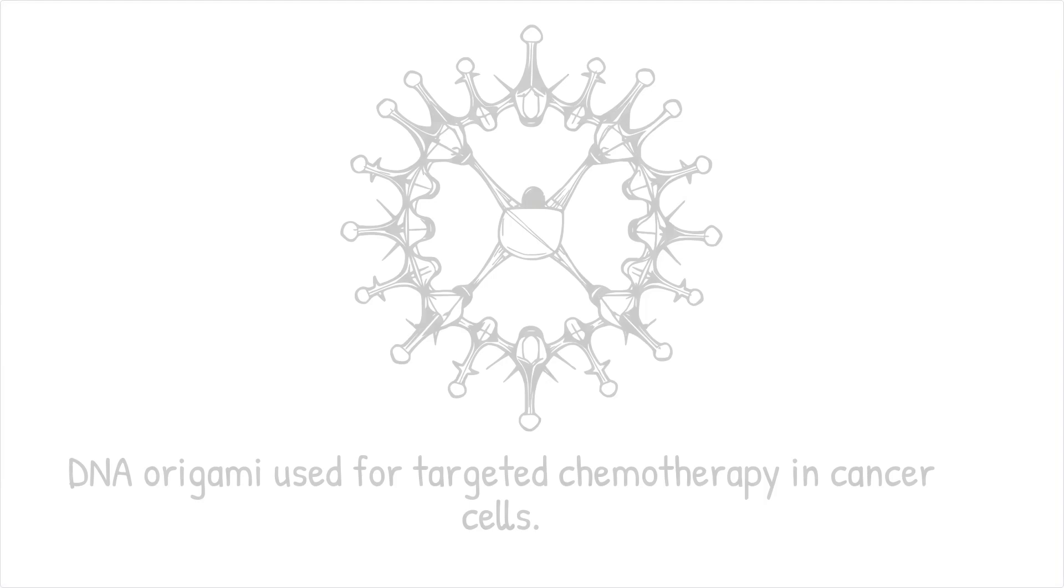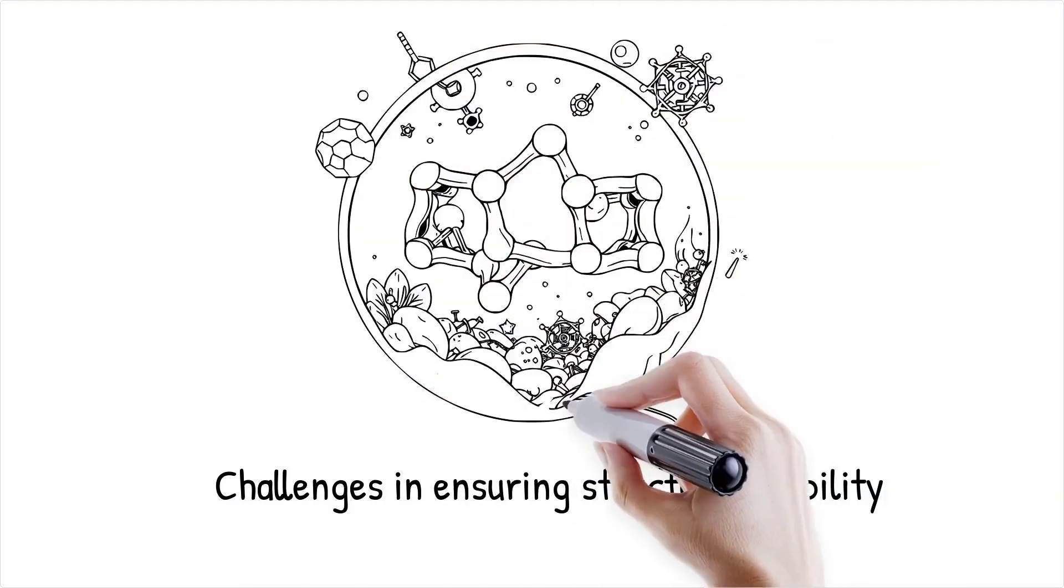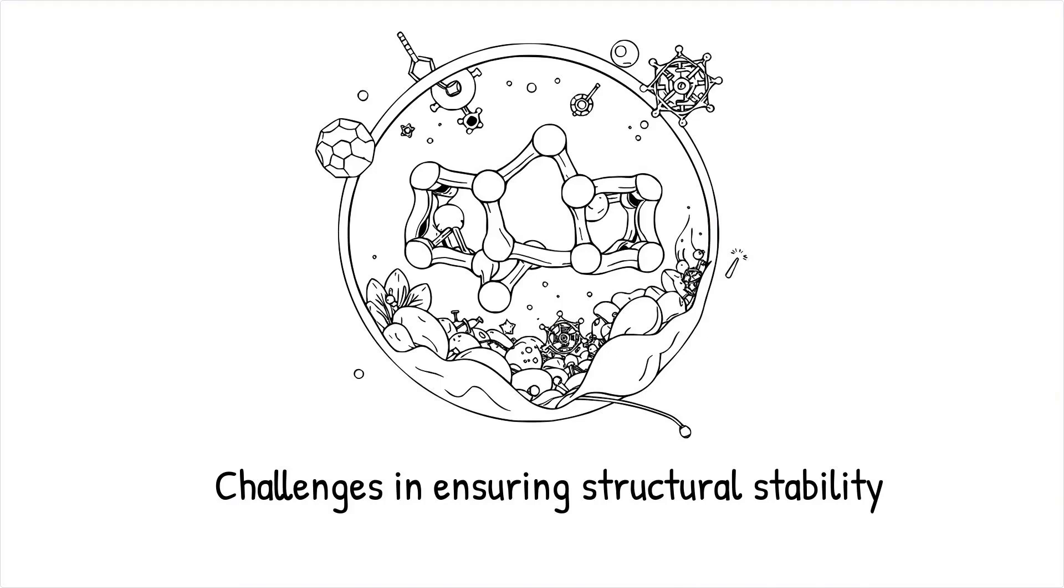One of the biggest hurdles in molecular origami is ensuring structural stability in dynamic environments, such as within the human body, where enzymes, salts, and temperature fluctuations can degrade or distort the nanostructures.